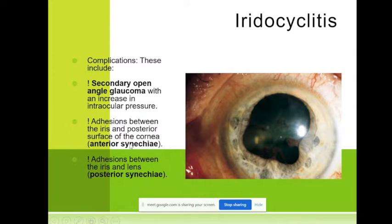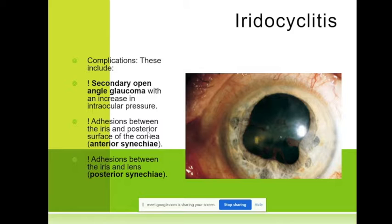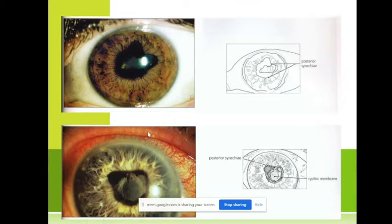There are also anterior synechiae — adhesion between the surface of the cornea and the iris. The posterior synechiae are the most common. Also, secondary open-angle involvement of the cornea is very often seen, but most often we see the posterior synechiae.